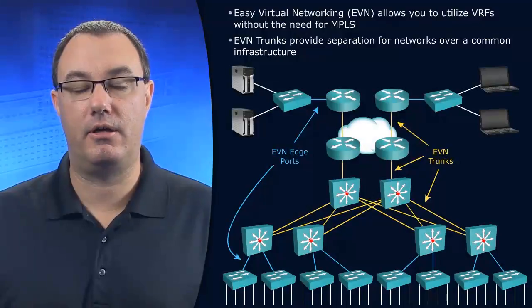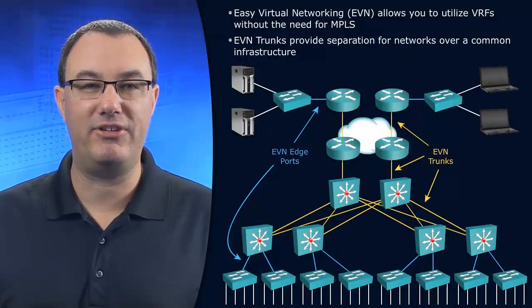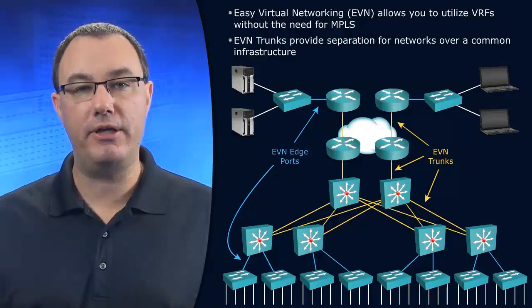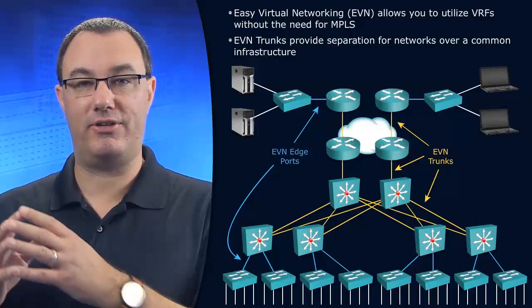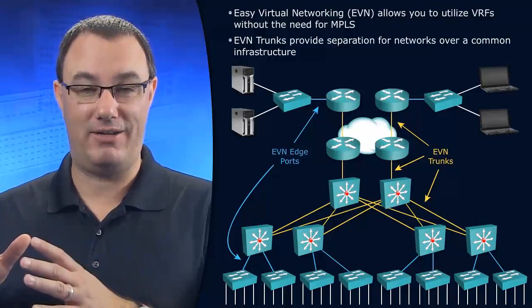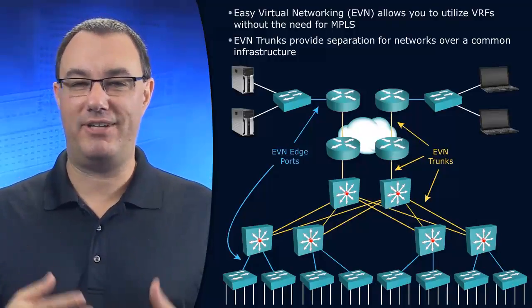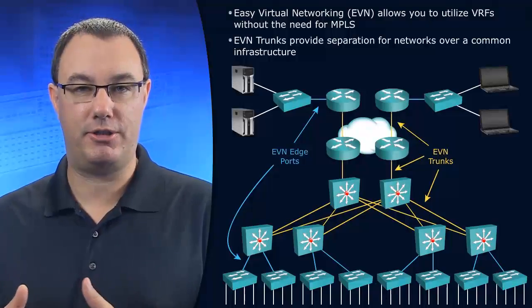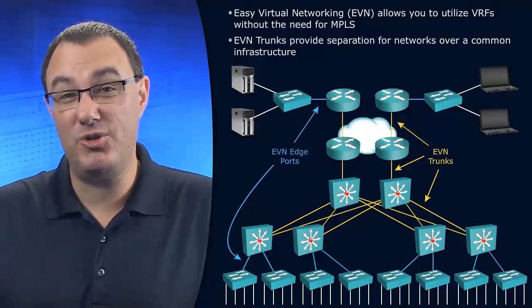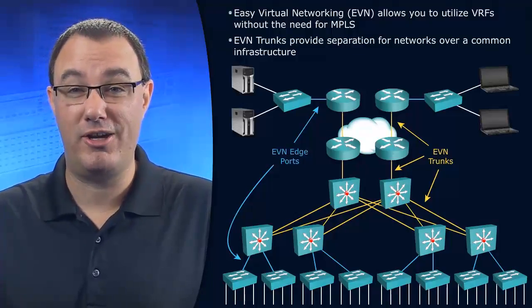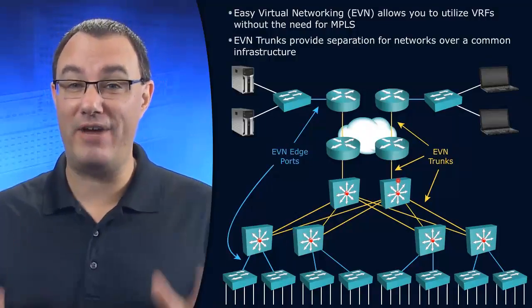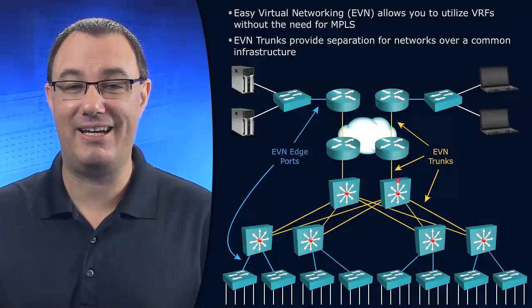There's a new technology on the block right now and that is Easy Virtual Networking. What it does is it takes the concept of VRFs — VRFs play a role in things like VRF Lite, and that's all great — but what if we wanted to take advantage of the separation behavior that we get with VRFs, but utilize 802.1q trunks between our layer 3 infrastructure devices?